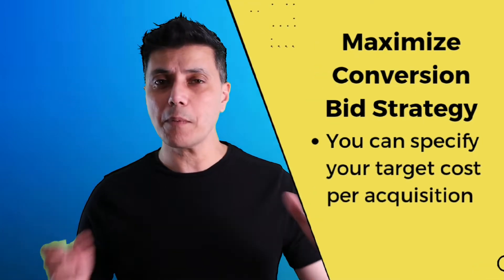You can say you want the maximum number of conversions but at a specific cost per acquisition. For example, if you're spending £100 or $100 and getting two conversions, that means your cost per conversion currently stands at $50. You can say to Google you want to lower that — say to $45. Always go in small increments, like 10 to 15%. Don't get too aggressive because you'll stop the account working and Google will get confused and it will just stop working.